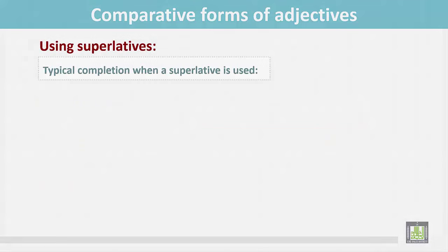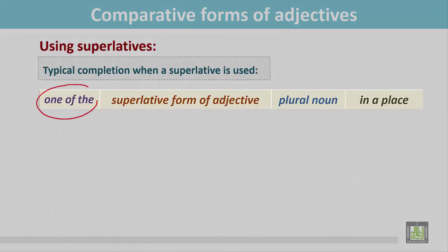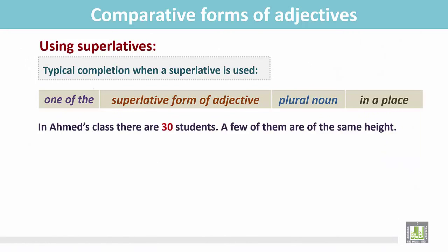Using superlatives. We use superlatives in another form. There is one of the before the superlative form of the adjective, and after that the plural noun. See the examples. In Ahmed's class there are 30 students. A few of them are of the same height.